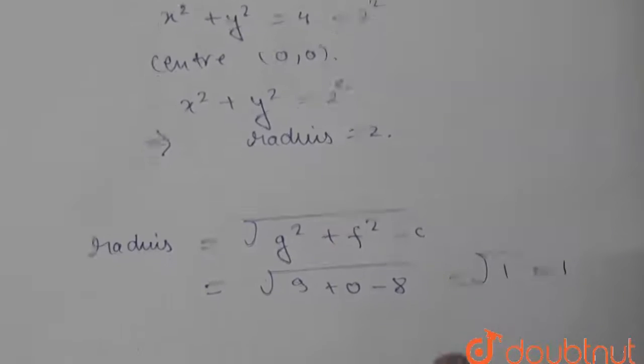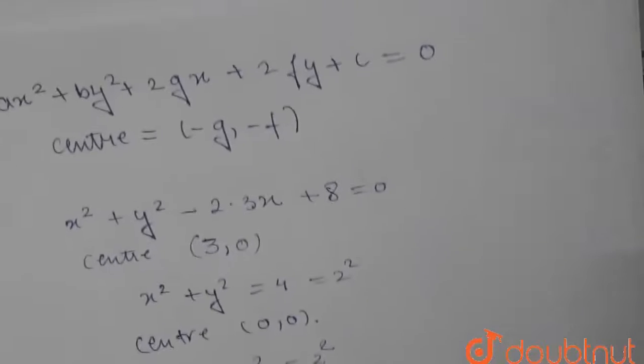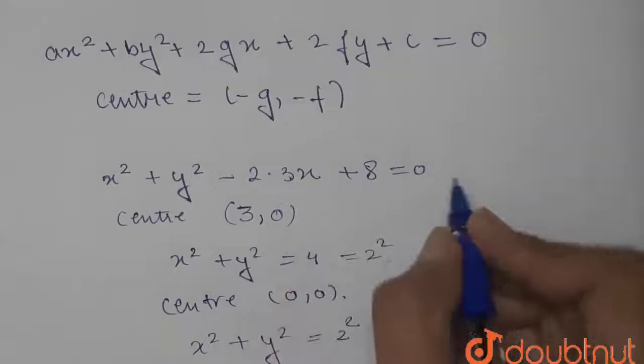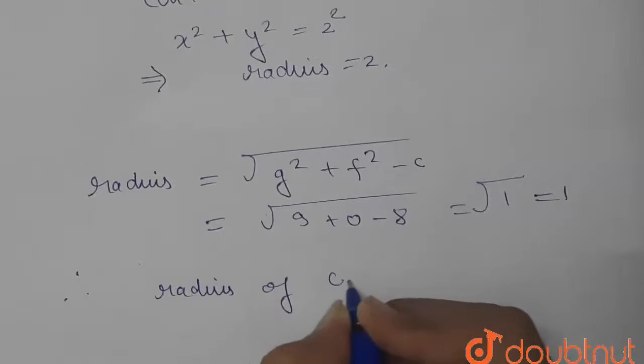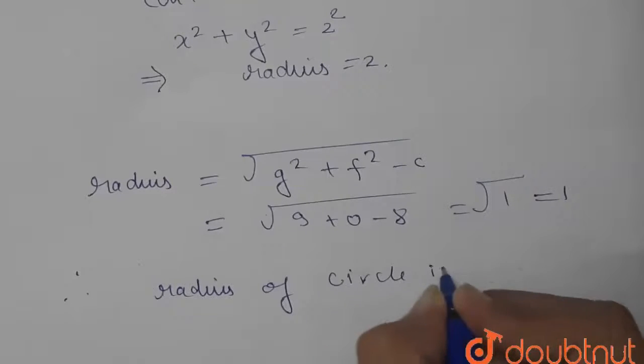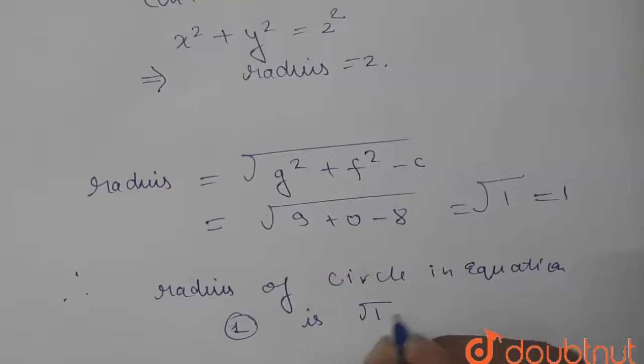So therefore, radius of this, see here its radius, let this be equation number 1. Therefore, radius of circle in equation 1 is given by √1, that is equal to 1.